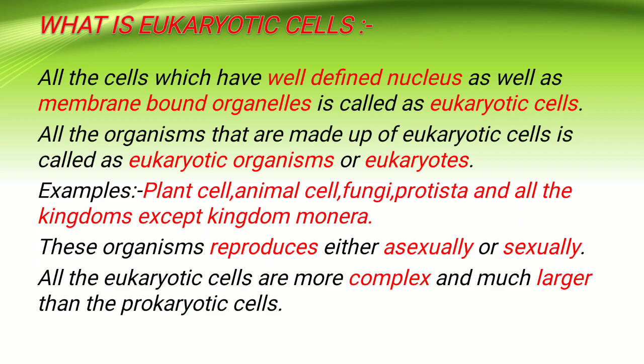Let us see some examples of eukaryotic organisms. They are plant cells, animal cells, fungi, protista, and all the kingdoms except kingdom Monera are included in the eukaryotic organisms. All eukaryotic cells are more complex and much larger than the prokaryotic cells, just like we human beings are very complex organisms.